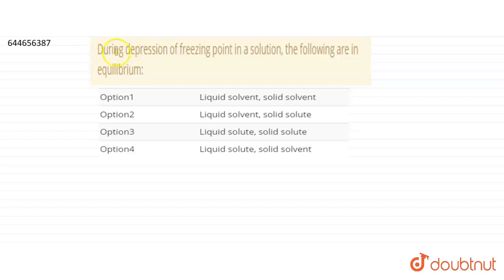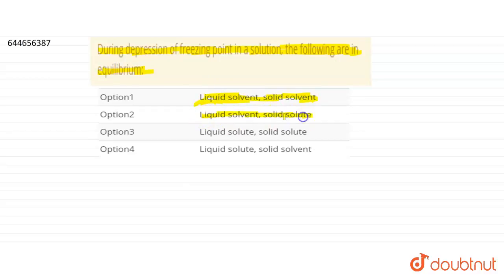Today our question is: during depression of freezing point in a solution, the following are in equilibrium. Option A: liquid solvent and solid solvent are in equilibrium. Option B: liquid solvent and solid solute are in equilibrium. Option C: liquid solute and solid solute are in equilibrium. Option D: liquid solute and solid solvent are in equilibrium. This is a very basic question from depression of freezing point.